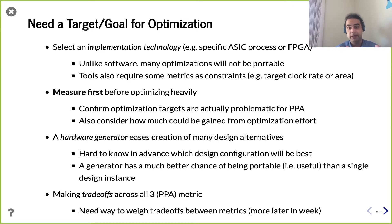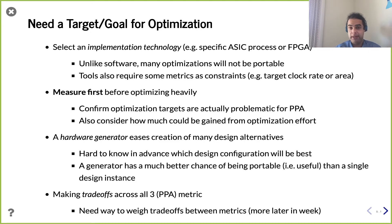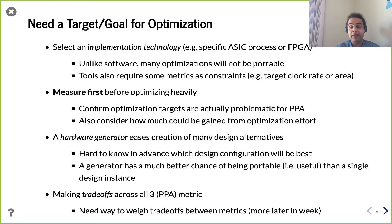A generator also means those knobs can be turned one way for one technology and another way for another technology, but it's the same generator producing the design — that's the reuse argument. This is where generators really shine: not just getting it right once but making something reusable. Even something as seemingly fixed as implementing a specified hash standard has trade-offs — more logic to finish in fewer cycles, or reduce area and accept longer runtime. Having a parameterized generator changes the way you approach hardware design.